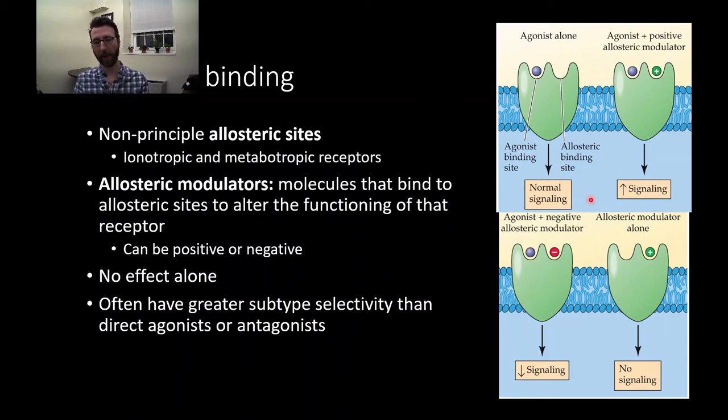We can talk through all of that graphically here. So here's our receptor. It's all very abstracted. We have some kind of metabotropic receptor doing some kind of signaling. If we have an agonist alone that binds to the agonist binding site, we're going to see, unsurprisingly, normal signaling. However, if we have an agonist and a positive allosteric modulator is present, we see increased signaling. The positive allosteric modulator increases the efficacy of that receptor. The agonist alone is producing a more powerful effect because the positive allosteric modulator is there.